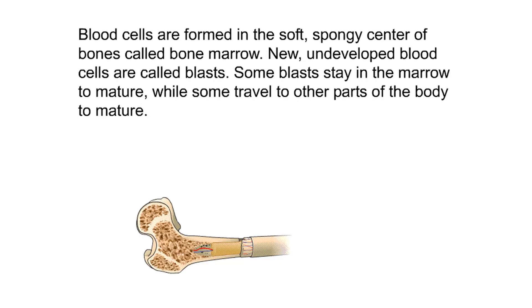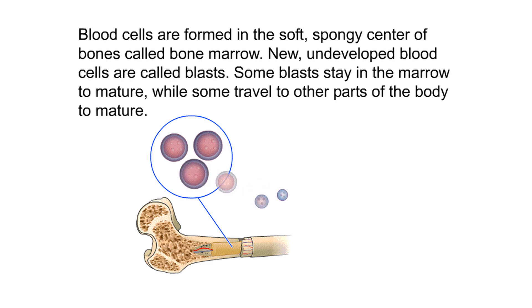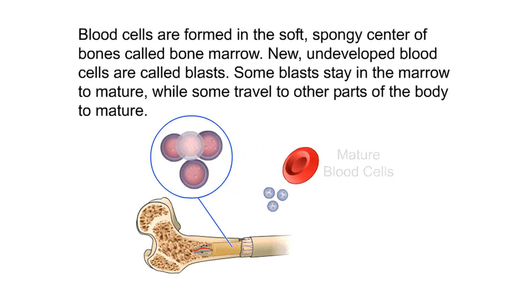Blood cells are formed in the soft, spongy center of bones called bone marrow. New undeveloped blood cells are called blasts. Some blasts stay in the marrow to mature, while some travel to other parts of the body to mature.